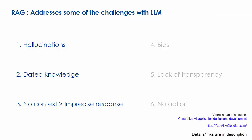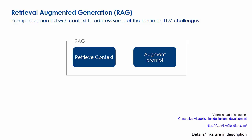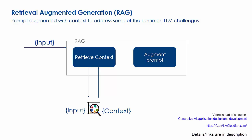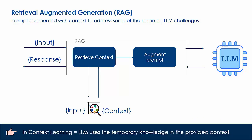Let's check out how a basic RAG flow works. In a basic retrieval augmented generation or RAG pattern, user input is passed to the retrieval system to get the context. Examples of retrieval systems are vector stores, databases, and other sources of contextual information that is needed for generating a response for the given input. The prompt, which consists of the user input, is augmented with this retrieved context and then it is sent to the LLM.